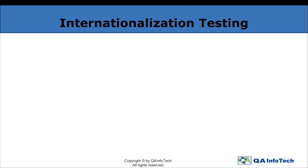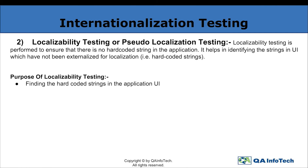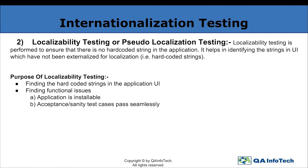The second type of testing under internationalization is localizability, or pseudo-localization testing. In this, we check that there should not be any hard-coded strings in the application — that is, all strings should be externalized. This testing also helps in checking the localization suitability of the product before UI translation. The purpose is to find hard-coded strings in the UI; during externalization, some strings may have been left out. If a string is not externalized in the resource file, it implies it did not go further for translation. One may also come across certain functional issues, wherein ensuring that an application can be installed on the corresponding OS and that acceptance sanity test cases pass flawlessly becomes imperative. Via pseudo-localization, there is also a chance to identify potential aesthetic UI bugs early on and fix them before translation ever starts.